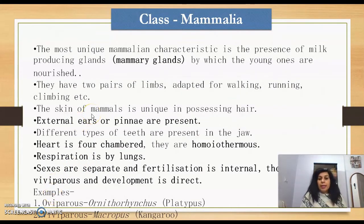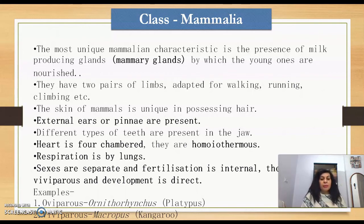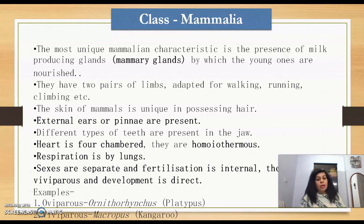Class Mammalia — the most unique character is the presence of milk-producing mammary glands to nourish young ones. They have two pairs of limbs adapted for walking, running, and climbing. The skin is unique in possessing hair. External ears (pinna) are present. Different types of teeth are present in the jaw. The heart is four-chambered. They are homeotherms, maintaining body temperature irrespective of external environmental temperature. Respiration is by lungs. Sexes are separate and fertilization is internal. They are mostly viviparous with direct development.